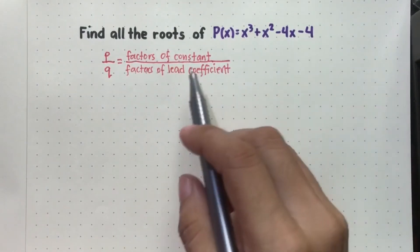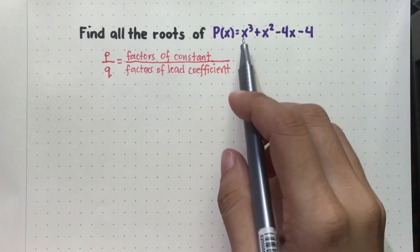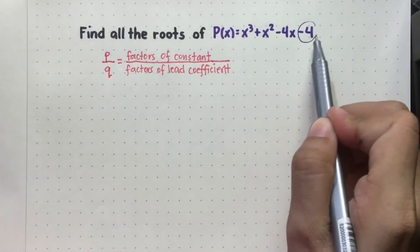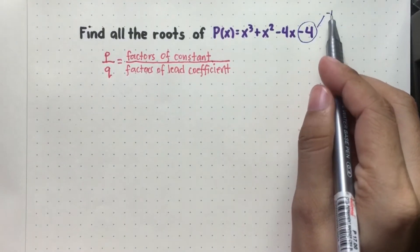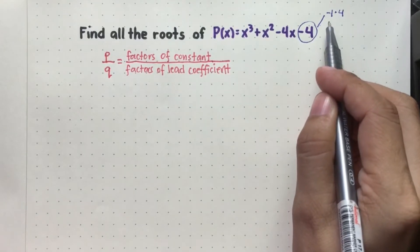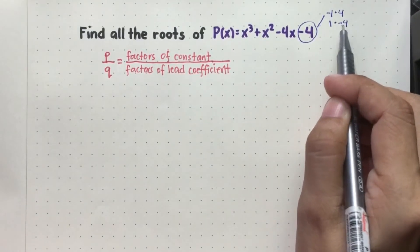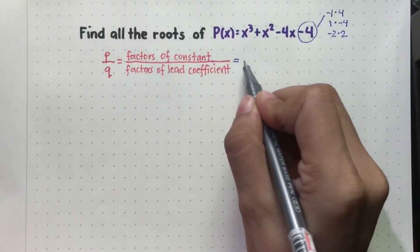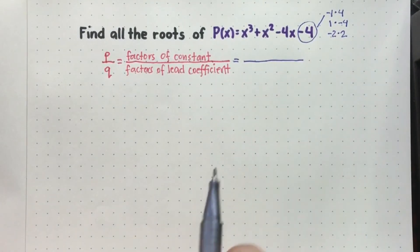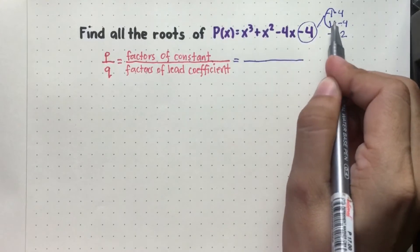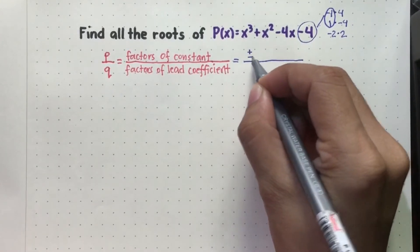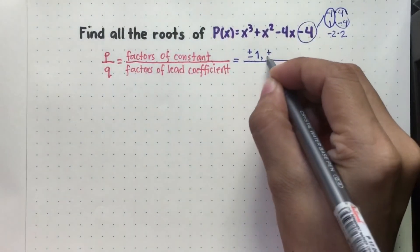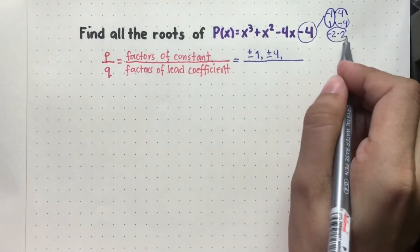So from the given polynomial, the constant is negative 4 and the lead coefficient is from x cubed. It means for the numerator, we have to get the factors of negative 4. The factors of negative 4 can be negative 1 times 4, or positive 1 times negative 4, or negative 2 times positive 2. So we may write that as positive and negative 1, followed by positive and negative 4, and also positive and negative 2.